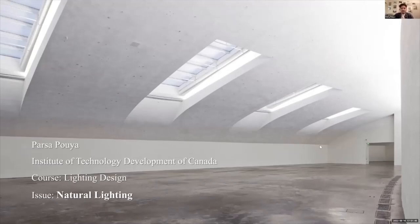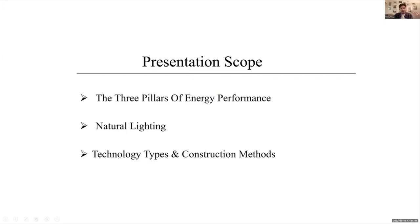At the beginning, we discover the three main pillars of energy performance, which tell us how natural lighting can affect two different aspects of our life. And after that, we have some examples of using or harnessing natural lighting.